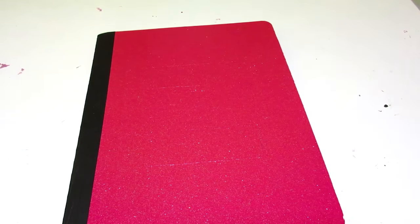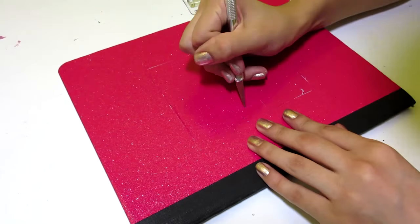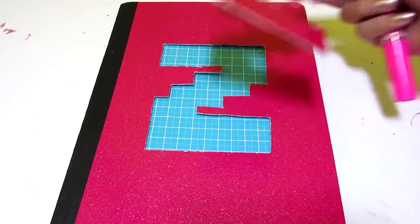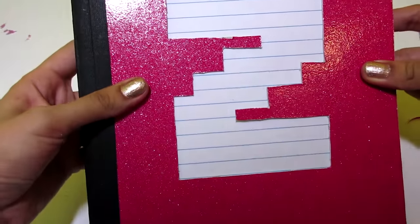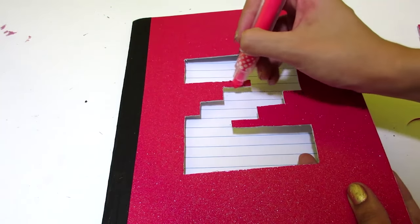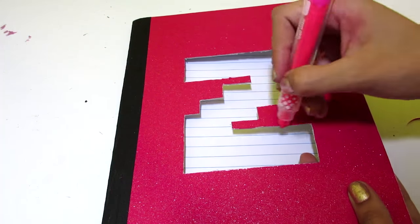Once I had the letter traced out, I removed the sheet and began cutting out my letter on the notebook. So, here it is after we've cut out our letter. This part is optional, but I went ahead and got a pink marker so that I could cover up any mistakes that I made.